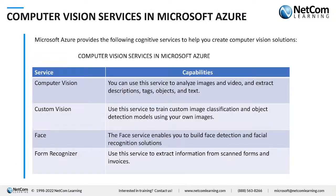Certain services in Microsoft Azure worth discussing: first is Computer Vision, which gives you the ability to use images and videos to gather data from them. You can use this service to analyze images and video and extract text, objects, tags, descriptions — essentially what is happening in a picture. All that information can be extracted using the Computer Vision service.